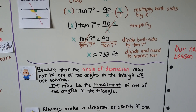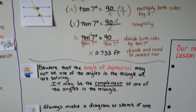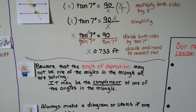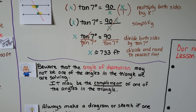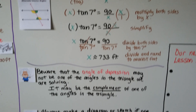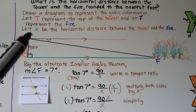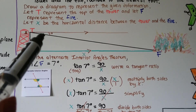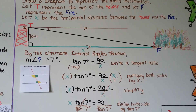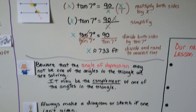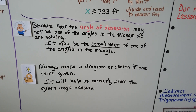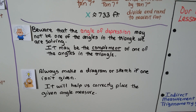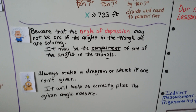Beware that the angle of depression may not be one of the angles in the triangle you're solving — it may be the complement of one of the angles, or you may need to use the alternate interior angles theorem as we did here. Always make a diagram or sketch if one isn't given, and it will help correctly place the given angle measure.